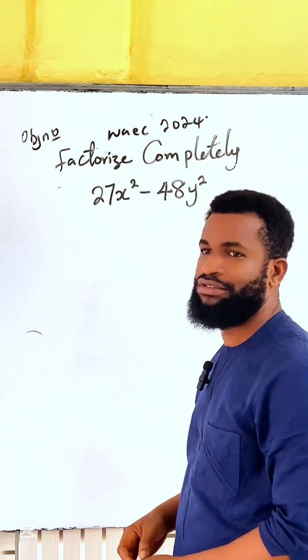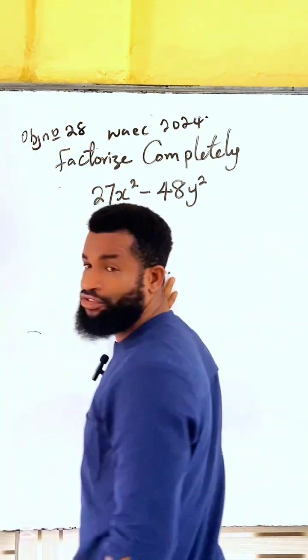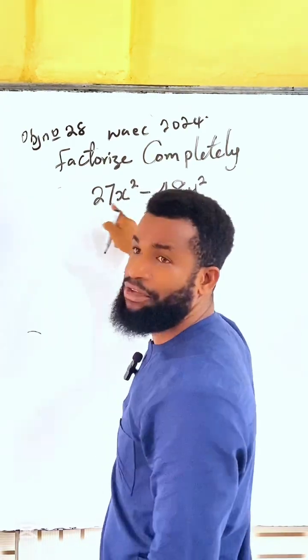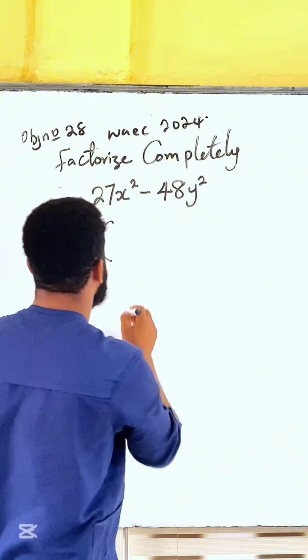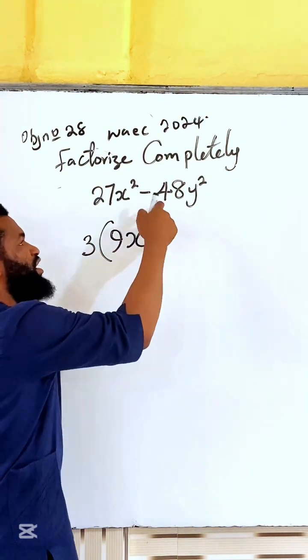This is question number 28. How do we solve this completely? I will first of all factorize 27 and 48. 3 can factorize them - 27 divided by 3 is going to give me 9, so we get 3(9x² - 16y²).